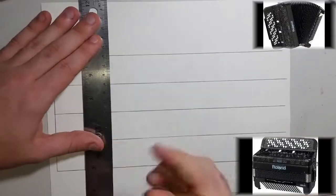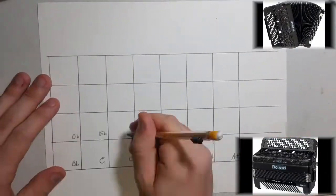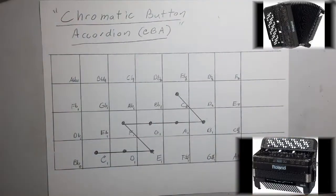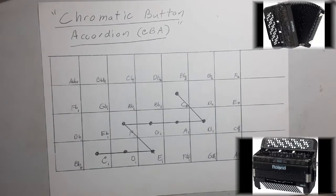The Chromatic Button Accordion has two systems, referred to as the B System and C System, each being a mirror of the other. While the accordions themselves are tuned to 12-tone equal temperament, the note layout supports alternative tunings.